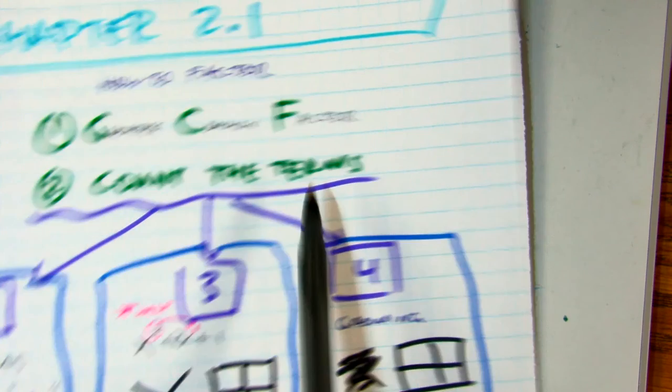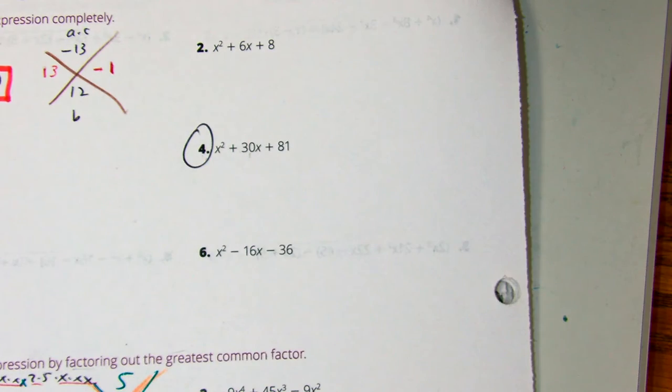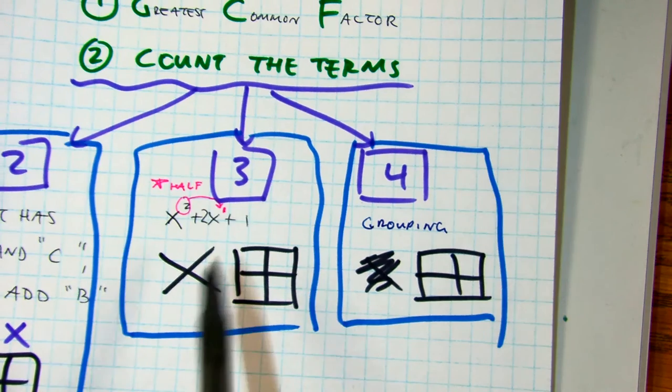Then I'm going to count the number of terms: 1, 2, 3. Class, I need to use my x box. Right.